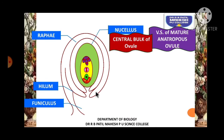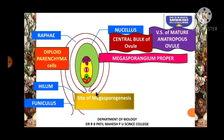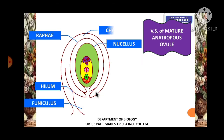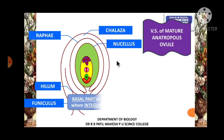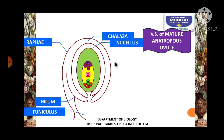Nucellus is a central bulk of the ovule, also called megasporangium proper, because one of the cells of the nucellus will act as a functional megaspore mother cell. It is diploid and made up of parenchyma cells, and the nucellus is the main site for megasporogenesis. The region opposite to the micropyle is called chalaza. It is the basal part of the nucellus where integuments, that is protective coverings, develop. It is called the chalazal end of the ovule.